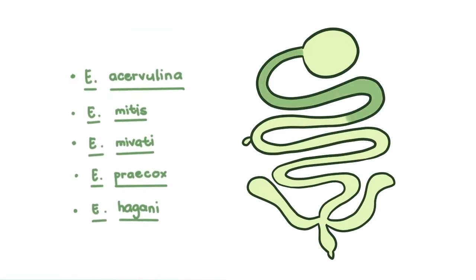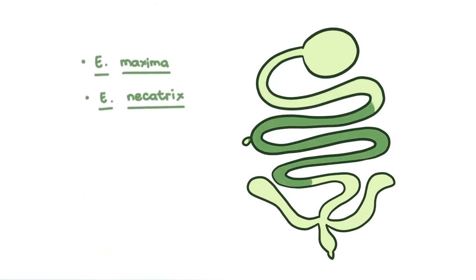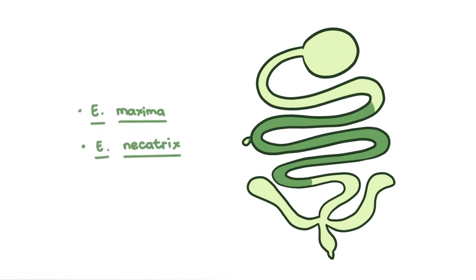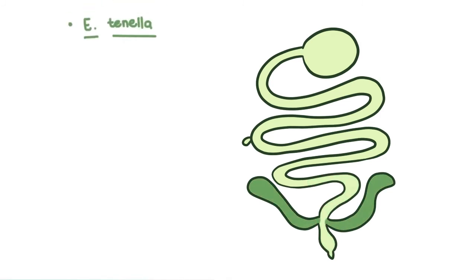The upper third by the first five, the middle third by the following two, the lower third by Eimeria brunetti, and the ceca by Eimeria tenella.